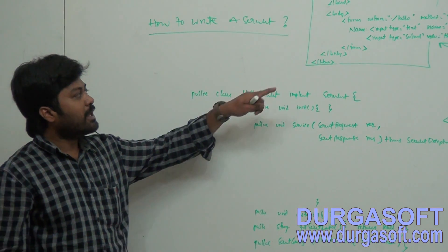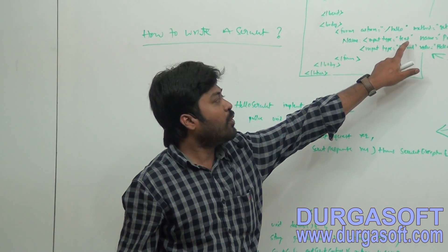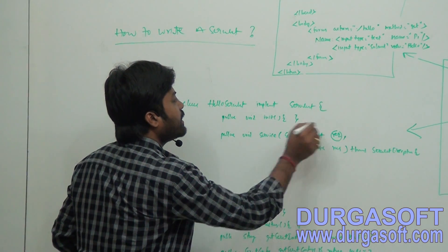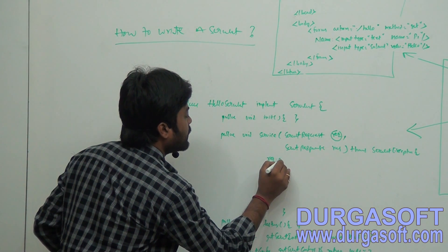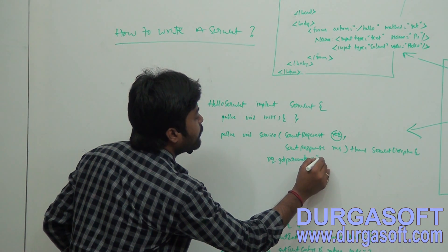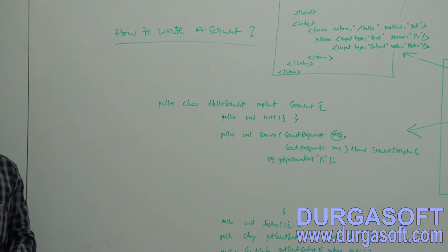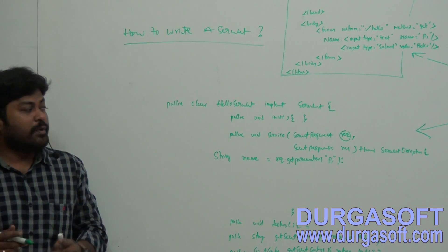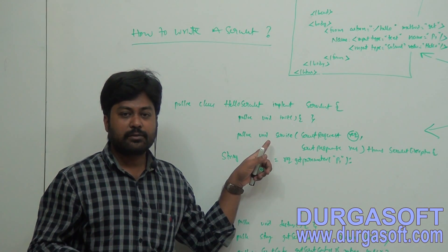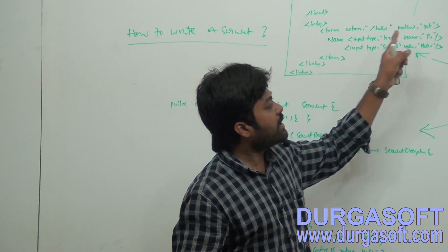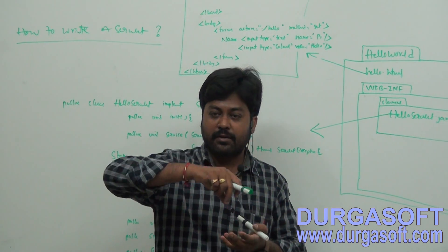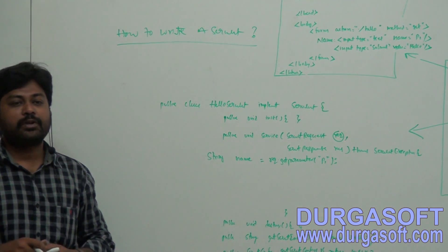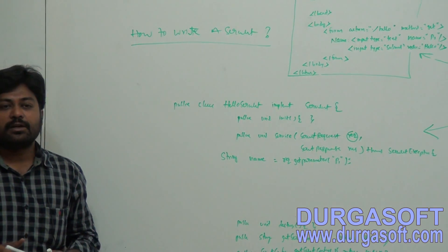Inside the service method, whenever you submit the form data with some text, you need to read that data using the request object. Use request.getParameter('p1') to read the name entered by the user. The servlet container converts the HTTP request into a ServletRequest object and passes it to your service method. Using that, you read parameter p1. Once you get p1, you can send output back to the user — something like 'Hello User'.